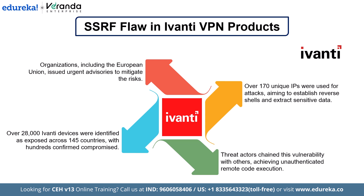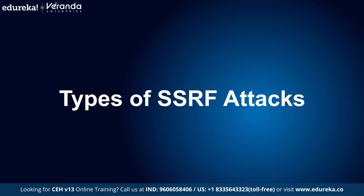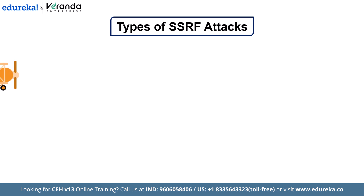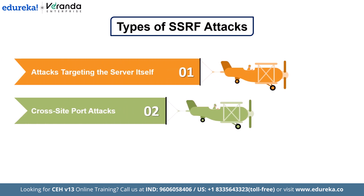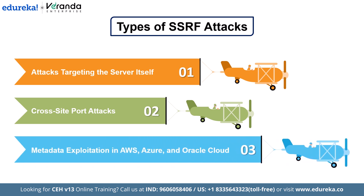Now that we've explored the impact of SSRF attacks, let's see their different types. Understanding these categories will help you grasp the various ways attackers exploit this vulnerability. SSRF can manifest in different ways depending on what the attacker is targeting. We will explore three primary types: attacks targeting the server itself, cross-site port attacks, and metadata exploitation in AWS, Azure, and Oracle cloud environments.